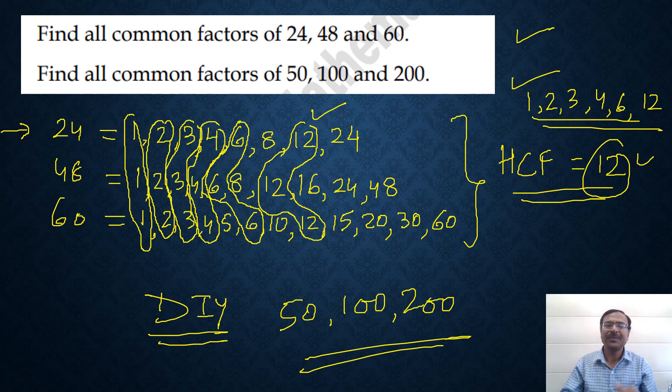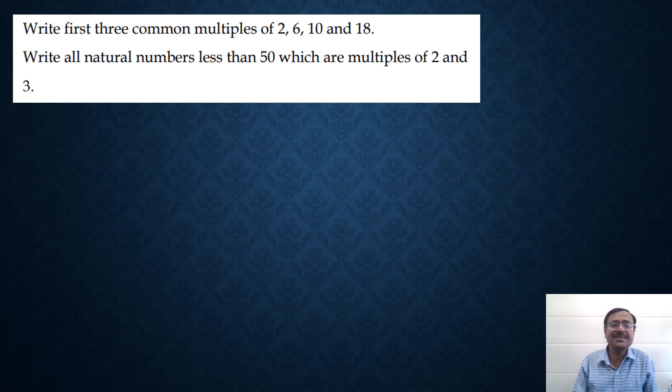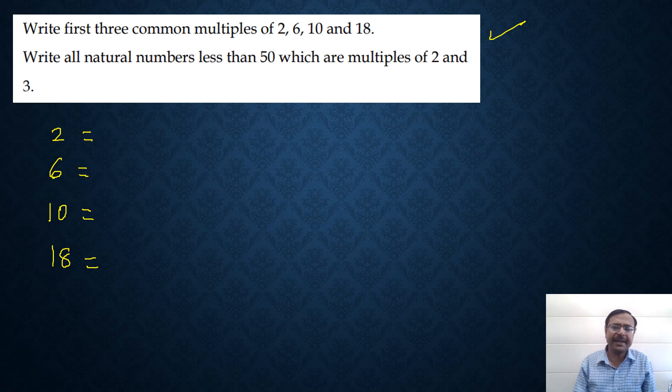Let's see now the next question. Write first three common multiples of, now common multiples, see: 2, 6, 10 and 18. We need to write the common multiples. You know what are multiples, right? The multiples of 2 are 2, 4, 6, 8, 10, 12 and so on. Multiples of 6: 6, 12, 18, 24, 30, 36 and so on. Multiples of 10 are obvious: 10, 20, 30, 40. 18: 18, 36, 54, 72, 90, 108 and so on. So we need to write the first three common multiples and for that we need to know the least common multiple first.